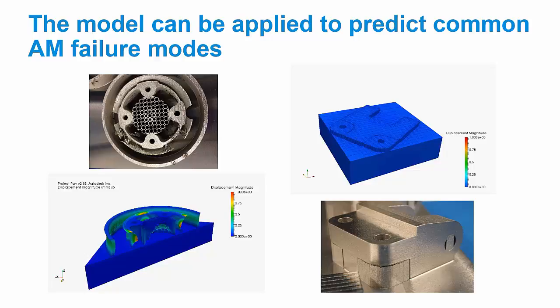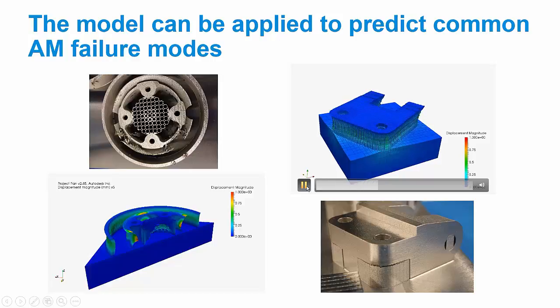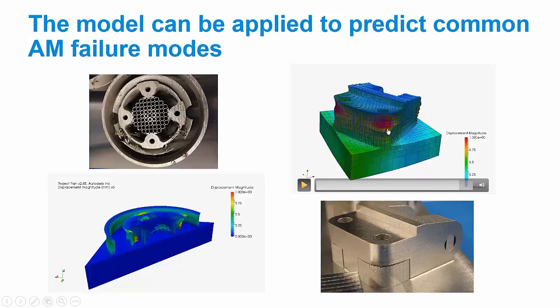Another common failure mode shown here is this part delaminates a bit from the support structure. So now the user can prescribe we're going to actually simulate the full part here and the support structures, and we're going to prescribe a failure stress at the interface between the two. And if that's exceeded, the elements will fail. You can see as that stress got exceeded, those elements in that zone failed. This distortion is magnified by something like 10 times, which is why it looks so dramatic. But we can say that in that area, you may want to strengthen the support structure to anchor this part down.